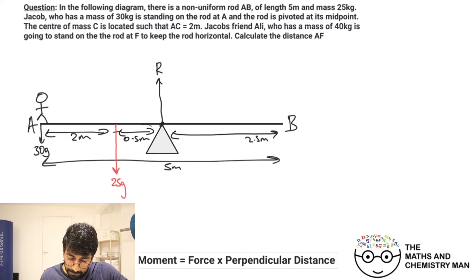We've got Jacob's friend Ali. He's got a mass of 40 kilograms, and he's going to stand on the rod at F to keep it horizontal. Now, if Ali was to stand on this side, obviously the seesaw is going to tip downwards, so you clearly want to put Ali on this side, but we don't know where. We'll just put him somewhere for now.